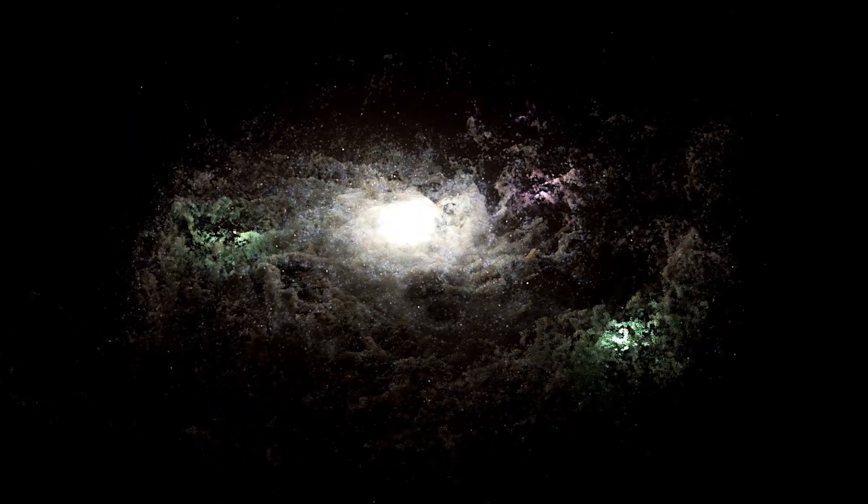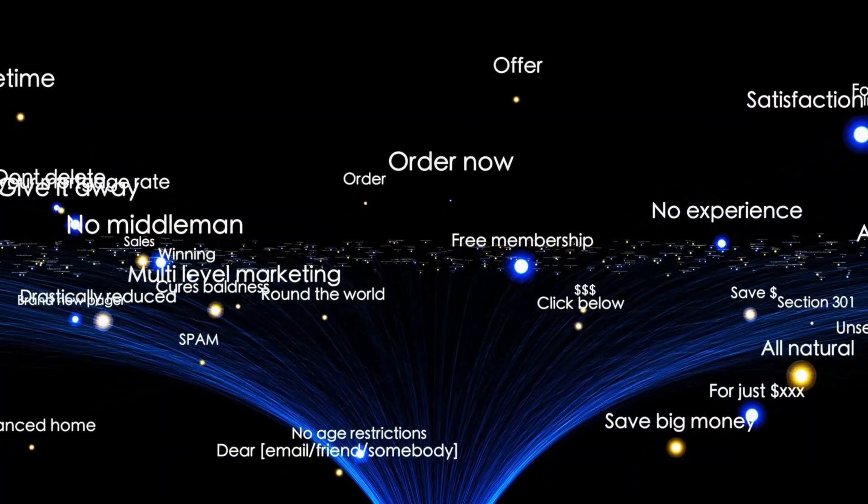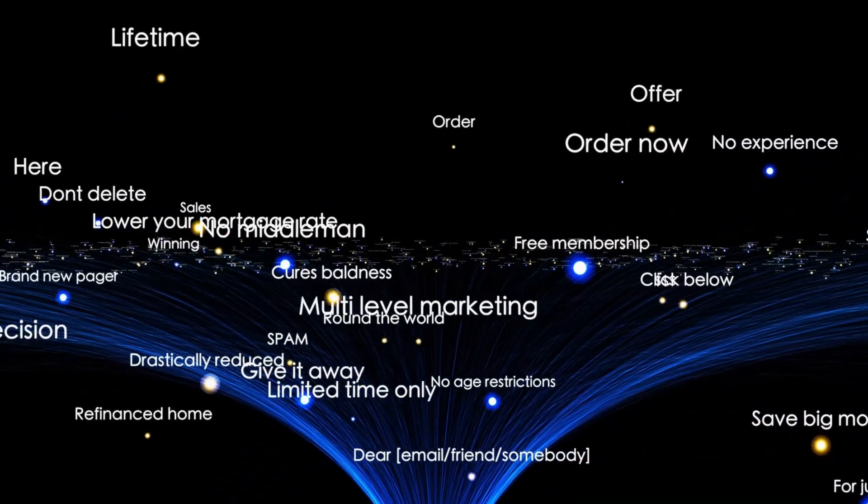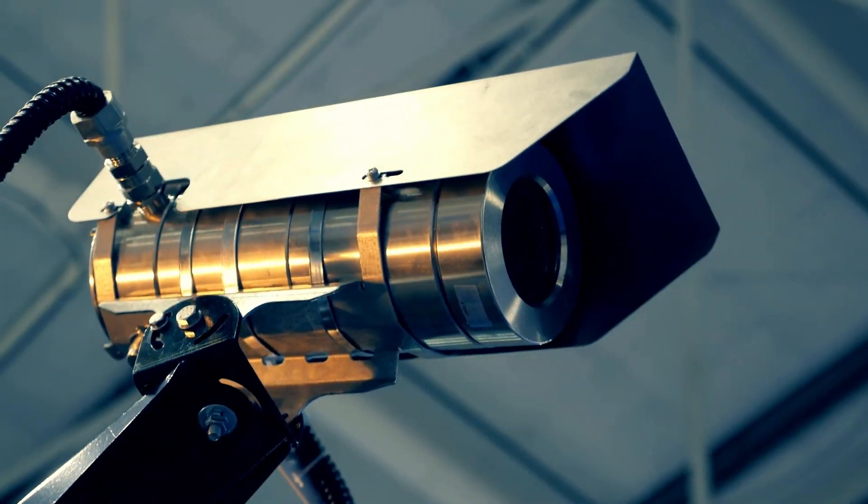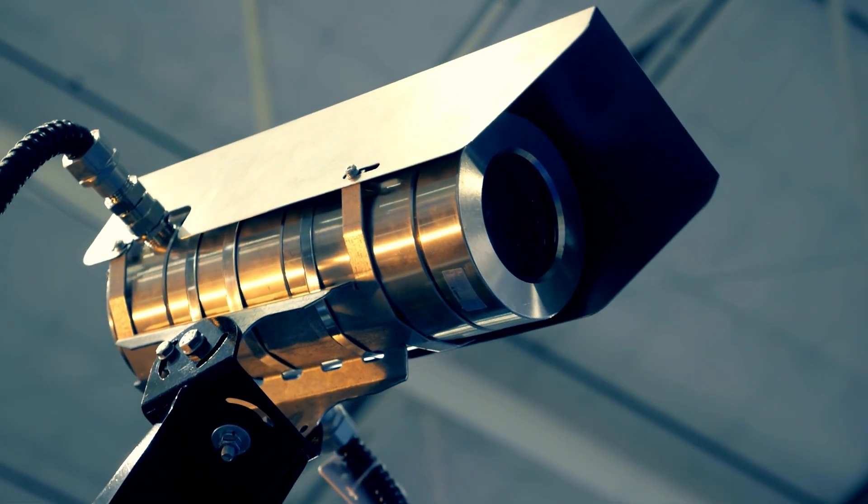Additionally, the Laniakea supercluster, which contains our Virgo supercluster, as well as the Hydra-Centaurus supercluster, is part of this vast system. This set of structures was named after the richest superclusters.